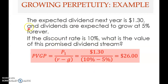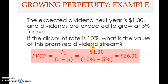Here is an application: the expected dividend next year (P1) for a common stock is $1.30. Dividends are expected to grow at 5% forever — this is G — making it a growing perpetuity. The required return R is 10%. Applying the formula: PVGP = $1.30 ÷ (10% − 5%) = $26. So you would be willing to pay $26 for this stock today to receive a growing dividend stream forever at a 10% return.